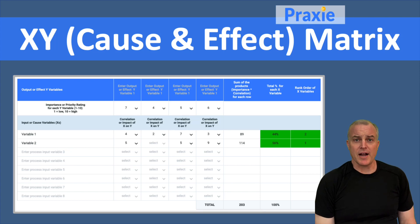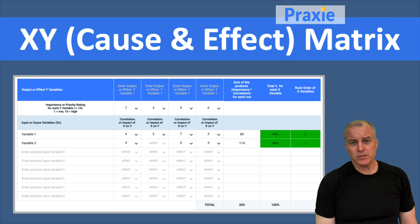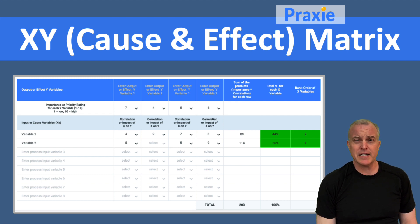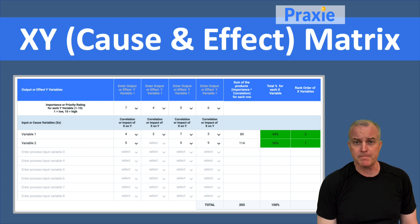Welcome to Praxi Best Practices. I'm Soren Kaplan, co-founder of Praxi.com. The XY matrix, also known as the cause and effect matrix, is a pretty popular tool in the Six Sigma world. It's usually used in the M phase — the measure phase — of the DMAIC project management model.